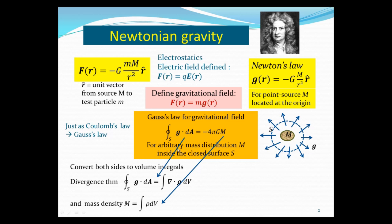Now, we can convert both sides of this expression in terms of volume integral. In particular, on the left-hand side, the surface integral can be written as a volume integral by the Divergence Theorem. The divergence of G integral over the volume equal to the surface integral of G dotted to dA, which is the left-hand side of this equation. And on the right-hand side, the total mass m can be written as in terms of mass density rho, so rho dv integral over the volume gives you the total mass m.